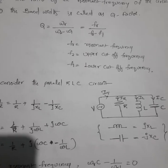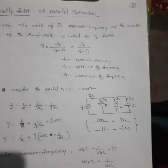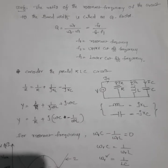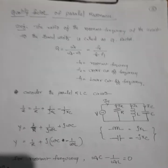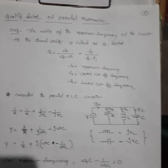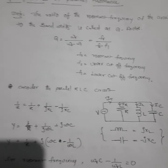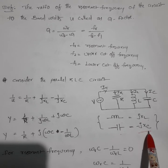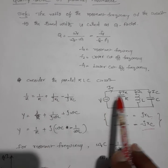To calculate the quality factor of parallel resonance, consider a simple RLC parallel circuit where R, L, and C are connected in parallel. To find the resonant frequency, set the imaginary term equal to zero. The impedance of the inductor is jX_L and the impedance of the capacitor is −jX_C. The total admittance is 1/Z = 1/R + 1/(jX_L) + 1/(−jX_C).